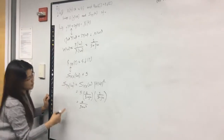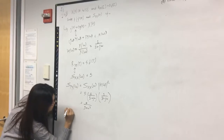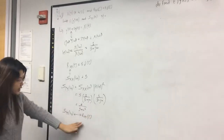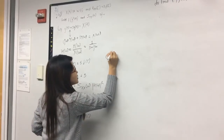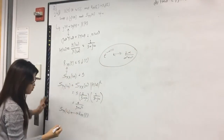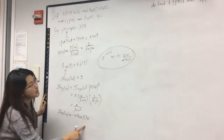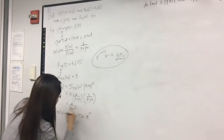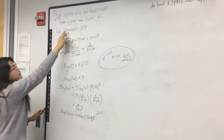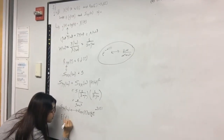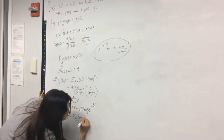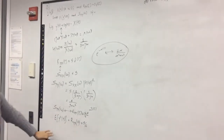Taking the inverse transform of the output power spectrum S_yy(ω) gives the autocorrelation R_yy(τ). Using the transform pair e^(−α|t|) ↔ 2α/(α² + ω²), we get R_yy(τ) = (5/6)e^(−3|τ|). To find E[y²(t)], we evaluate R_yy at τ = 0, which gives E[y²(t)] = 5/6.